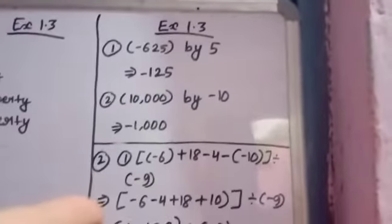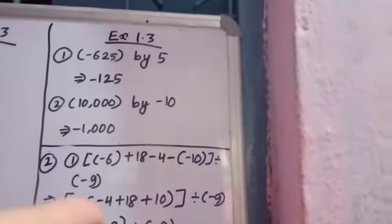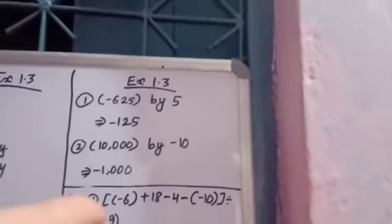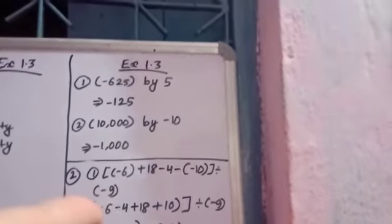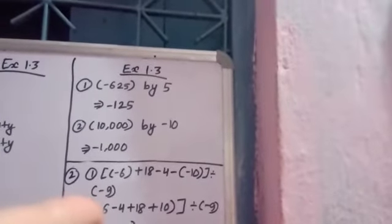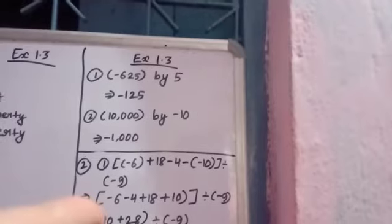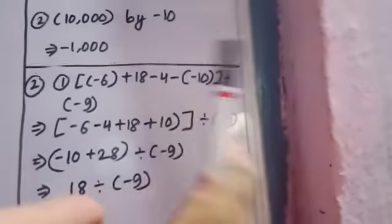I have solved here one question of question number 1. Minus 625 divisible by 5. So when we divide minus 625 by 5, then how much we are getting? Minus 125. Then 10,000 by minus 10, we are getting minus 1,000.